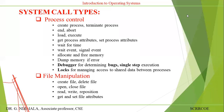Let us discuss about system call types: process control, file manipulation, device manipulation, protection and communication, and information security system calls. System calls are the instructions given by the user to the OS. These are by means of C language instructions like sleep, wait, and likewise various types of system calls.